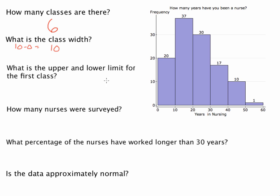When we talk about upper and lower limits, what we're talking about is what numbers are going to be included in this class. Since we are looking at the first class, what numbers are going to be found in here? Well, 0 is included. This histogram uses what are called cut points, so it's going to include 0, but it's not going to include 10.